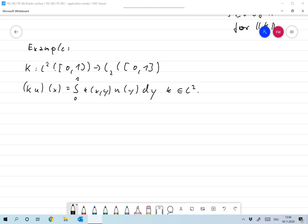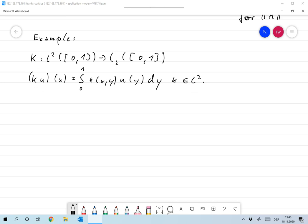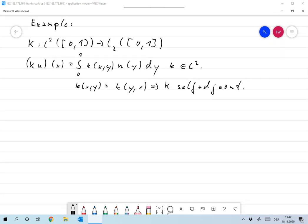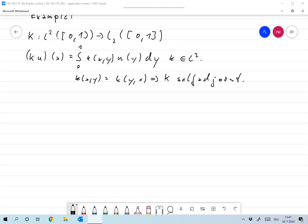The question is when is that a self-adjoint operator, and we immediately find that if k is symmetric, which means that k(x,y) is the same as k(y,x), then it follows that K is self-adjoint. And yeah, well let's prove that.